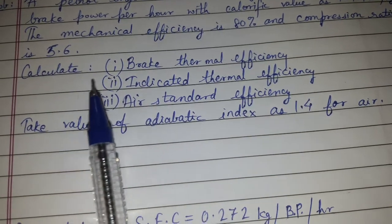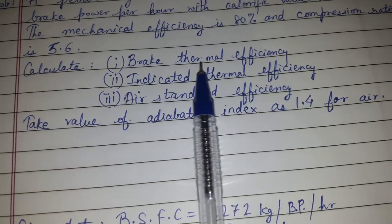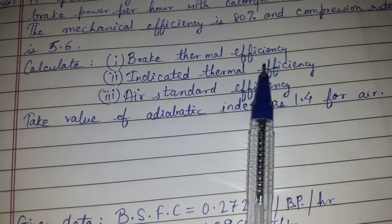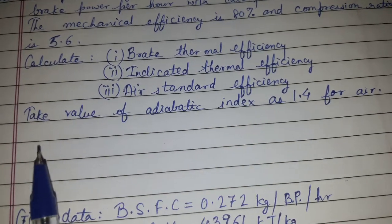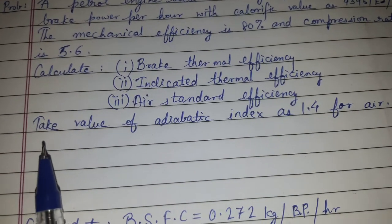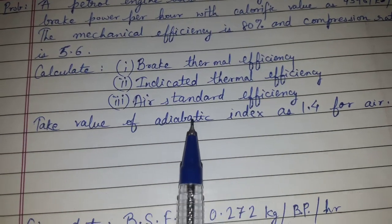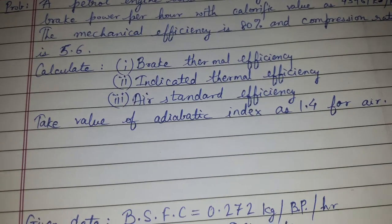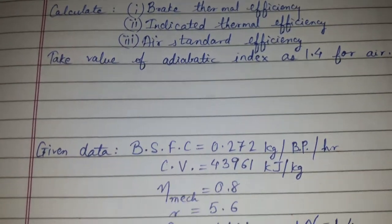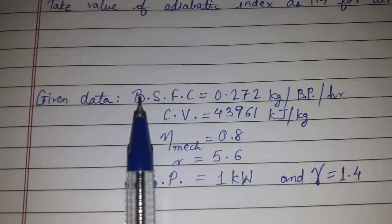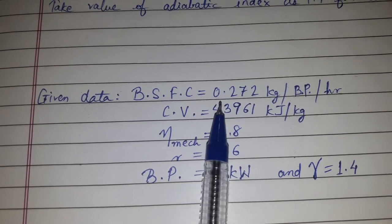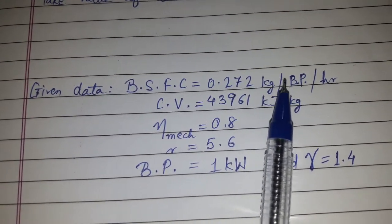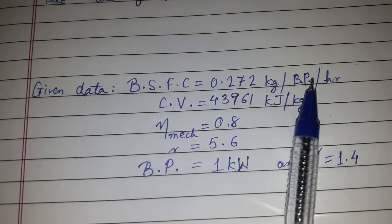We are to calculate brake thermal efficiency, indicated thermal efficiency, and air standard efficiency. It is given to take the value of adiabatic index as 1.4 for air, that is gamma is equal to 1.4.